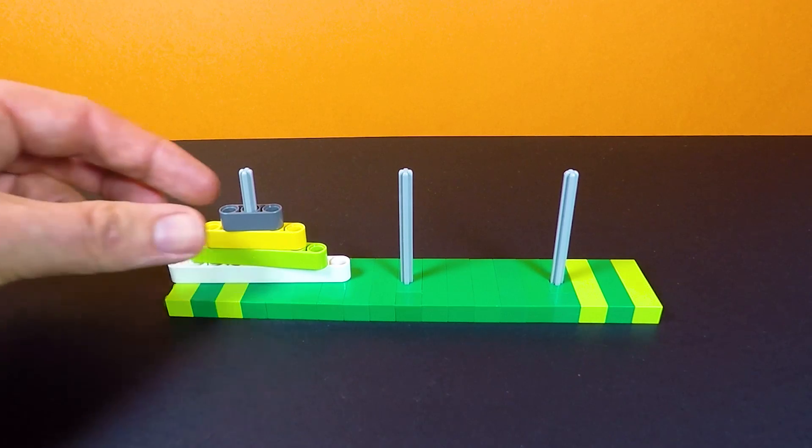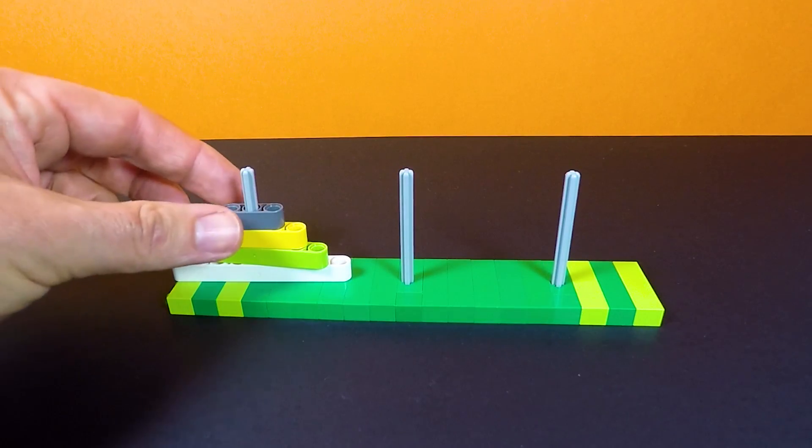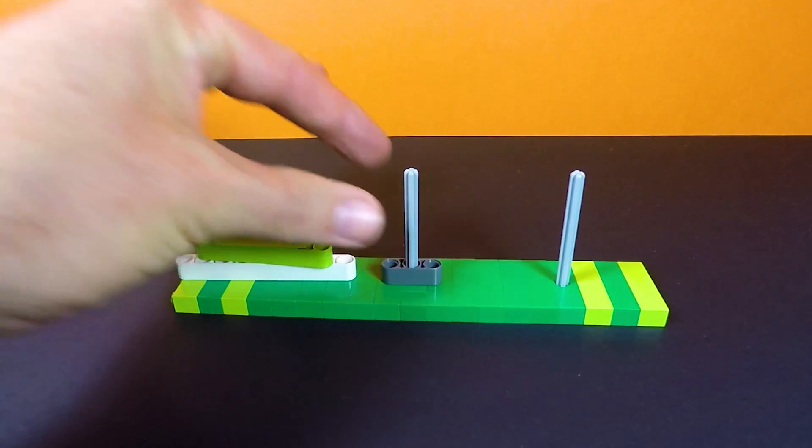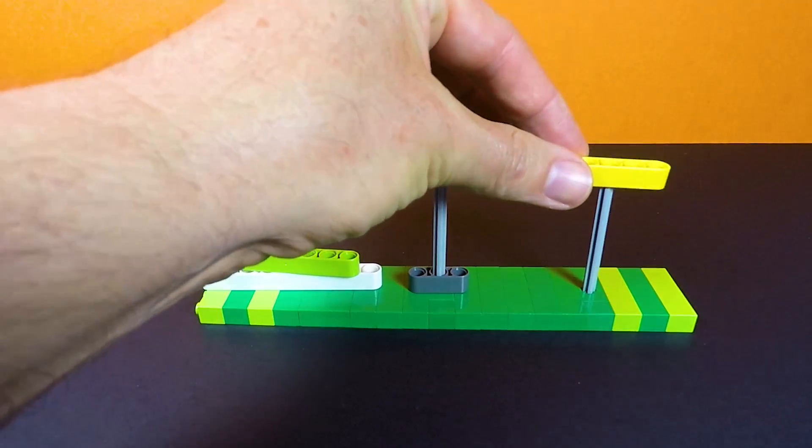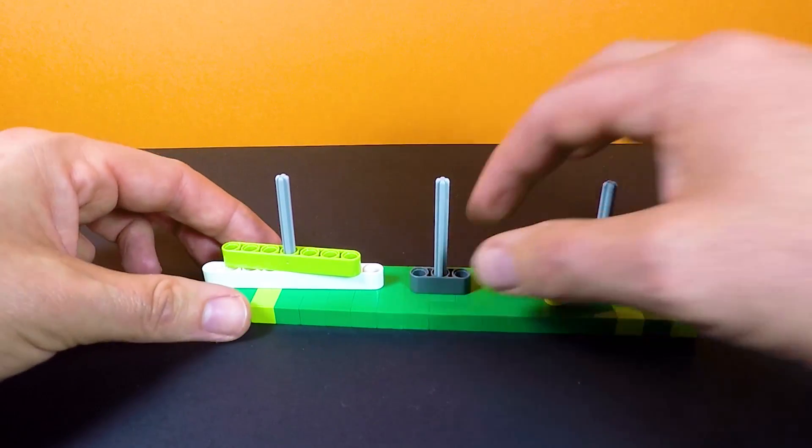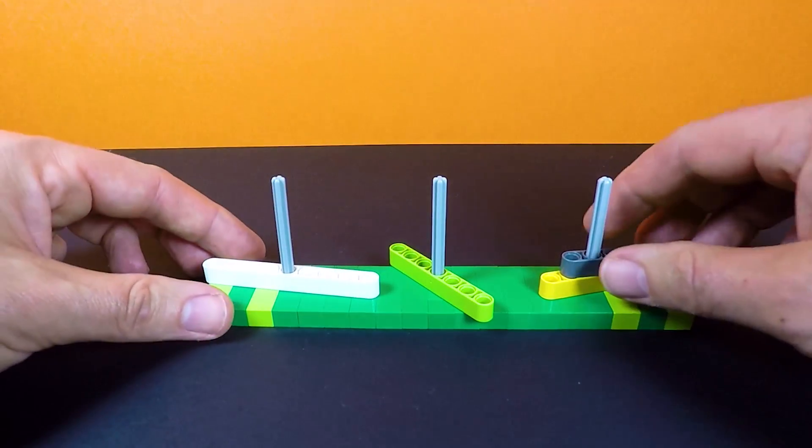The object is to get these pieces across to this rod here, but when you move a piece you can only put another piece on top that's smaller. So you have to actually try to work out how to get the pieces across to the other side without actually breaking the rules.